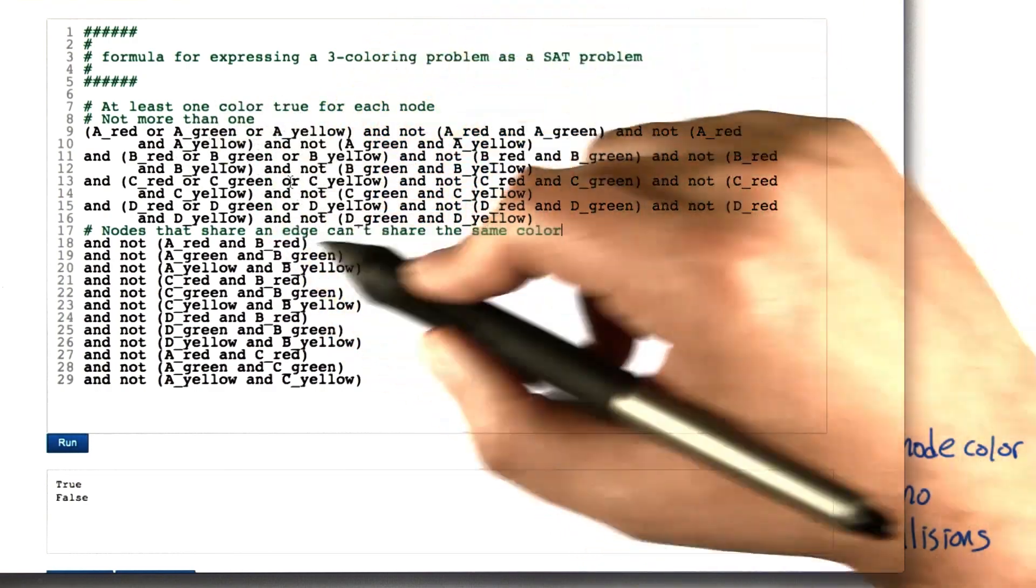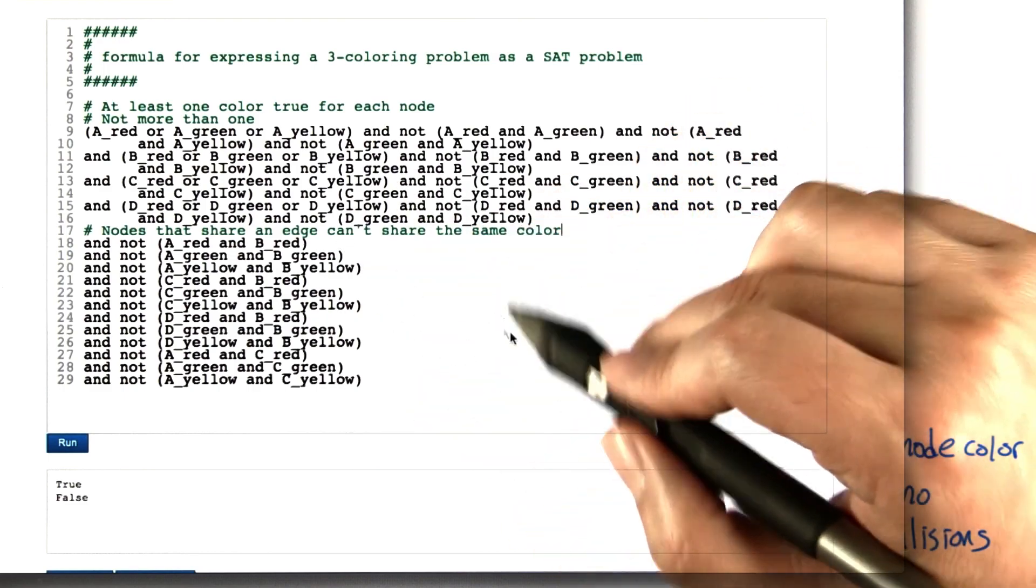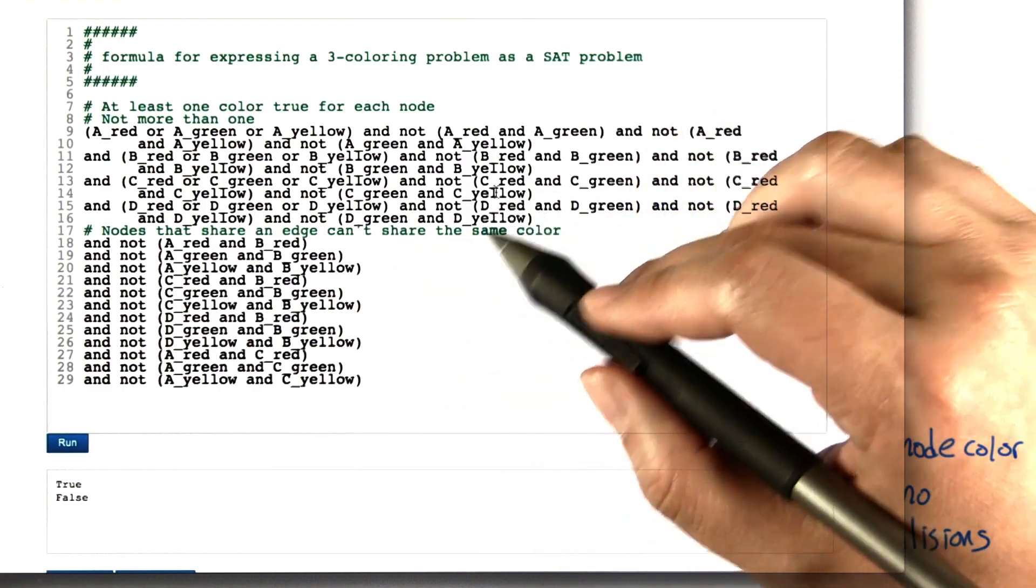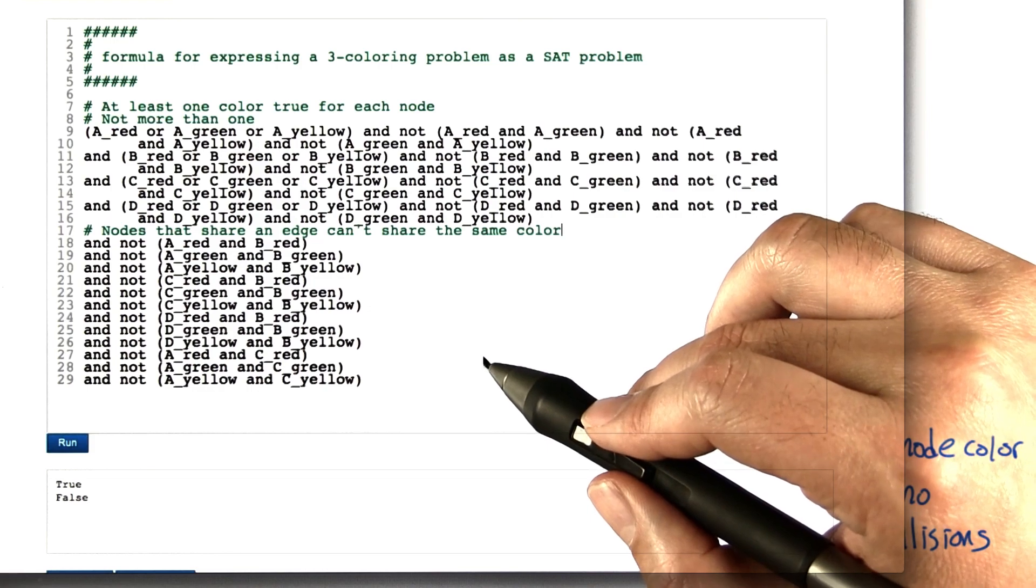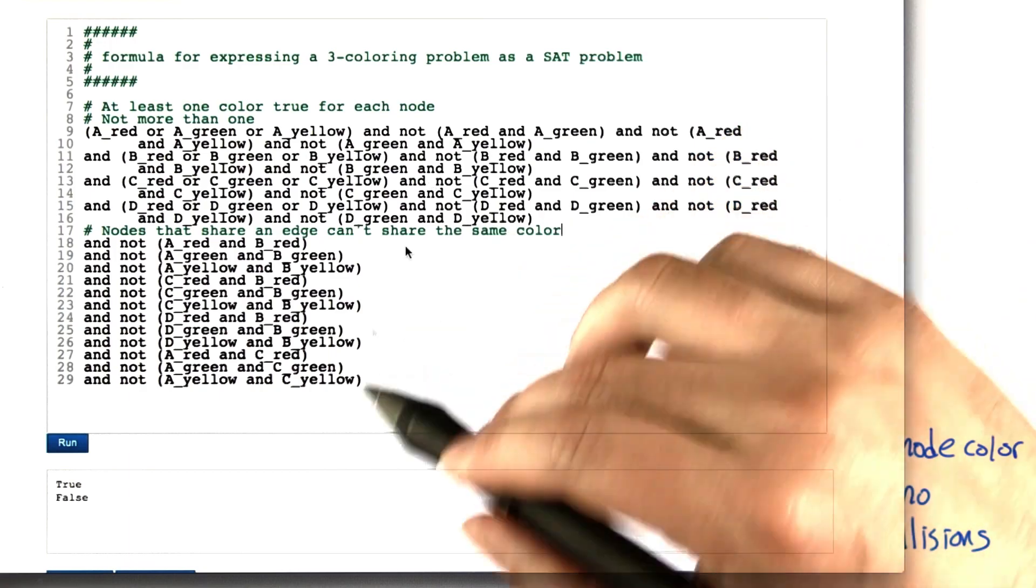Now in this case I generated this formula by carefully looking at the graph and going back and forth and making a formula. But you can automate this idea by just generalizing the way that I did this here. So why don't you think about how to do that? And I'll ask you a question just to make sure that you've got the idea.